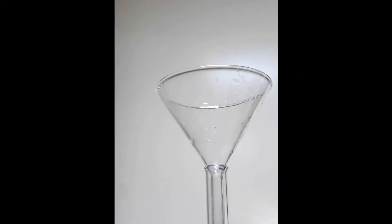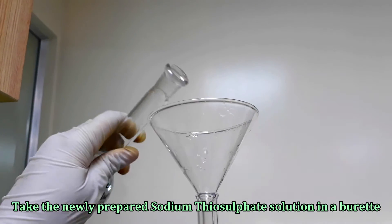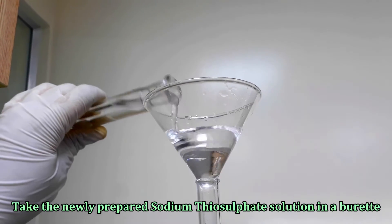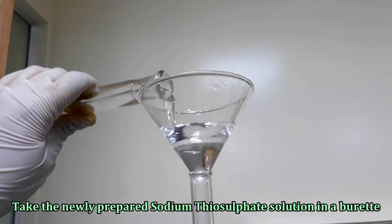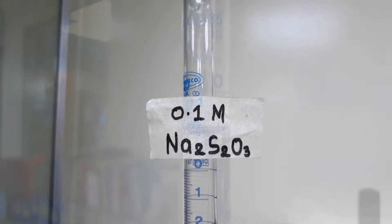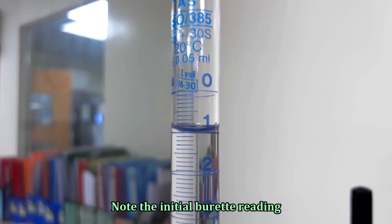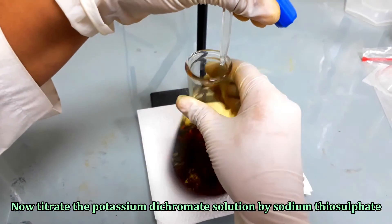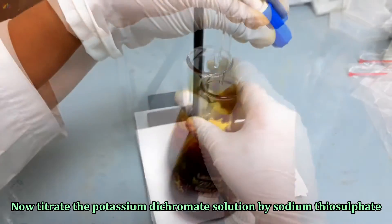For the standardization, take a newly prepared sodium thiosulfate solution in a burette. Note the initial burette reading. Now, titrate the potassium dichromate solution by liberating sodium thiosulfate solution from the burette.